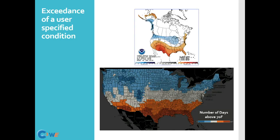We've built a tool that was originally built with the construction industry in mind, but you can imagine it can be used for any decision you want to make. The question the construction industry wanted answered was: how many days in this season is going to be above 70 degrees Fahrenheit? That is information you can use. The tool that we've built is totally interactive — a user can go in and say, for the next three or four months, how many days will be above 60 degrees?